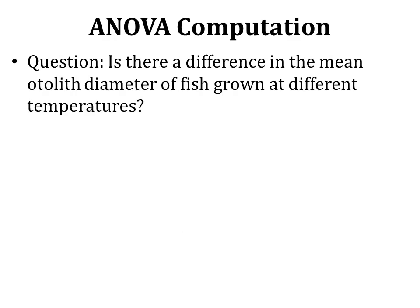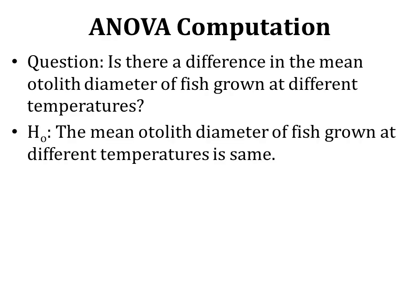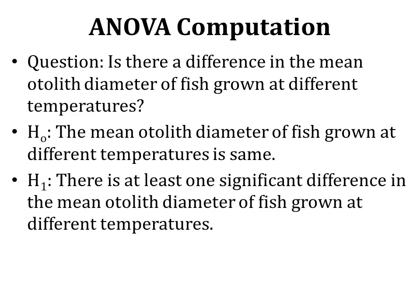The question is: is there a difference in the mean otolith diameter of fish grown at different temperatures? The null hypothesis is that the mean otolith diameter of fish grown at different temperatures is the same. The alternate hypothesis is that there is at least one significant difference in the mean otolith diameter of fish grown at different temperatures, which is stated this way to be more specific about the basic assumption of ANOVA.